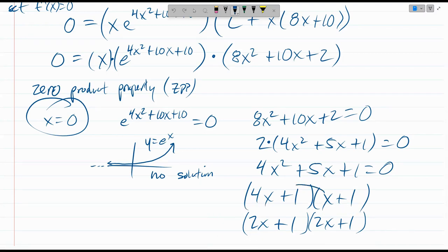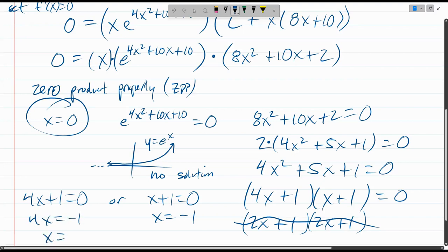But we need 5x. The top one, inside is 1x, outside is 4x. Add them, you get 5x. So that is how it factors. Still equals zero. So zero product property. We have 4x plus 1 equals zero. Or x plus 1 equals zero. So x is negative 1. Or 4x negative 1. x is negative 1 over 4.